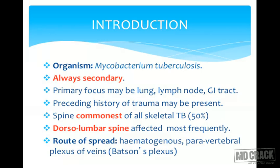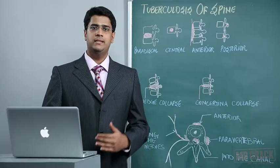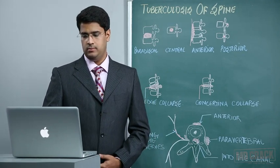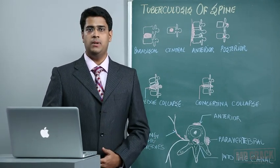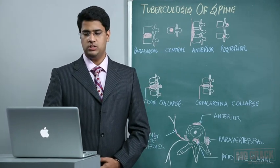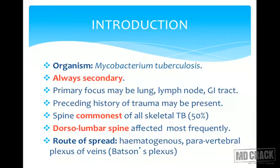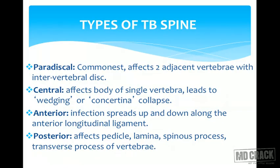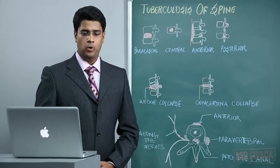The spine is the commonest affection of all skeletal tuberculosis, accounting for almost 50 percent of cases. The dorsal-lumbar spine is most commonly affected. The spine is divided into cervical, dorsal or thoracic, lumbar, and sacral parts, with the dorsal-lumbar region being the most common site. The route of spread is hematogenous, that is blood spread, and it can also spread via the paravertebral plexus of veins, commonly known as Batson's venous plexus.